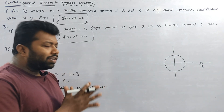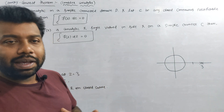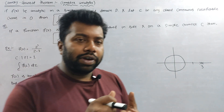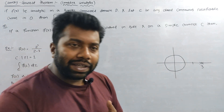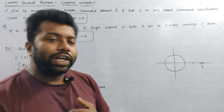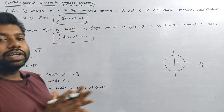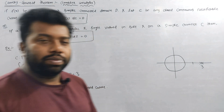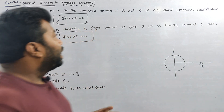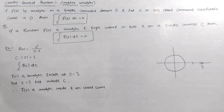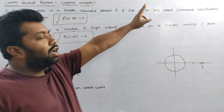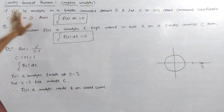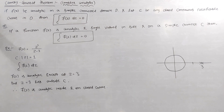We have three papers in the sixth semester: differential geometry, complex analysis, and group theory 2. We have a 100 marks paper — this is a total paper. In this video, we have complex analysis unit 2. We have the Cauchy-Goursat theorem and a problem.